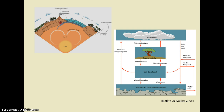Nutrients can move from one reservoir to another by a variety of processes. For example, available inorganic nutrients can become available organic nutrients by assimilation and photosynthesis. Conversely, available organic nutrients can become available inorganic nutrients through respiration, decomposition, and excretion. Unavailable nutrients can become available from organic sources such as oil and coal by burning fossil fuels releasing carbon dioxide, and from inorganic sources by weathering and erosion of rocks.